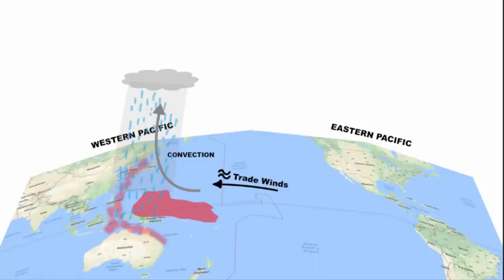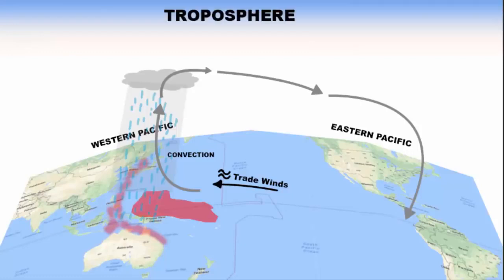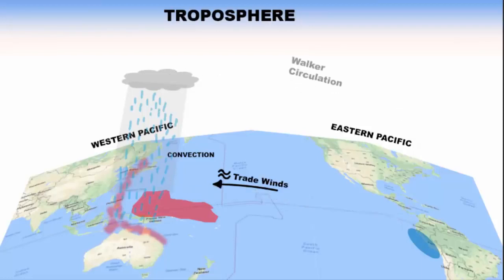The warm air then travels east towards the eastern Pacific Ocean — the region near South America, especially Ecuador and Peru. As the warm air rises, it reaches the top of the troposphere, which is cold. When warm air meets cool air, it slowly loses its moisture and becomes dry. The dry air travels towards the eastern Pacific and comes down over the Peruvian coastal region, making it cold. This pattern of rising air in the west and falling air in the east is known as Walker circulation.